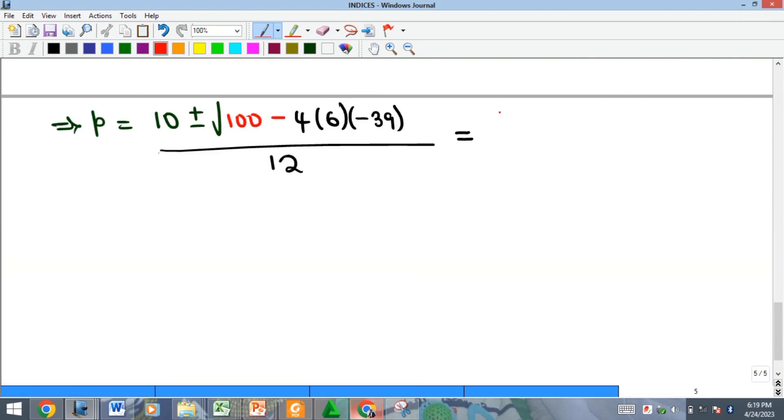We have 10 plus or minus. By the time you multiply this out, you're going to get 936. That's 4 times 6 times minus 39, which gives you plus 936.